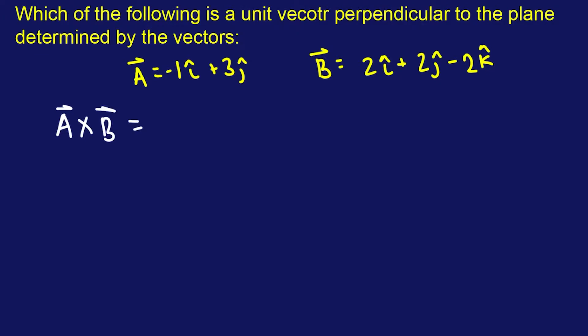And what does that mean? Exactly. A cross B — let's call this A and this is going to be B. And then we cross it, but we do that rotation, the right-hand rule. And this is going to be a normal vector that is spanned by these two vectors, A and B.